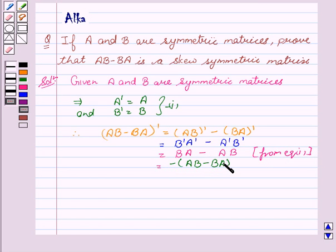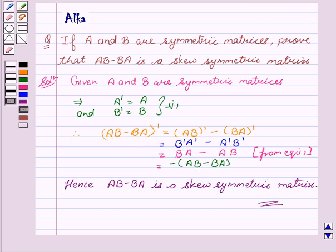This shows that AB minus BA is a skew symmetric matrix. Hope you understood the solution and enjoyed the session. Goodbye and take care.